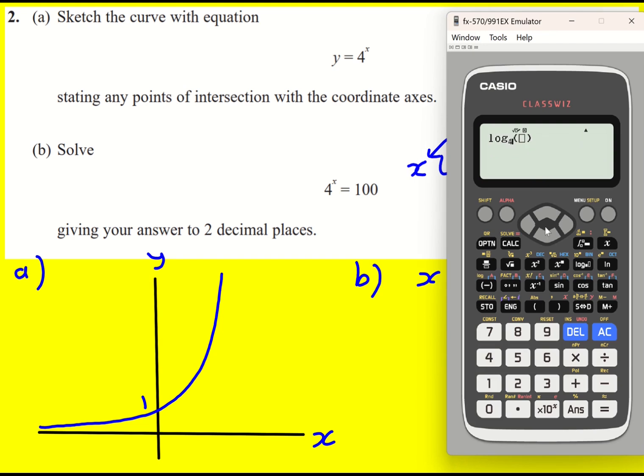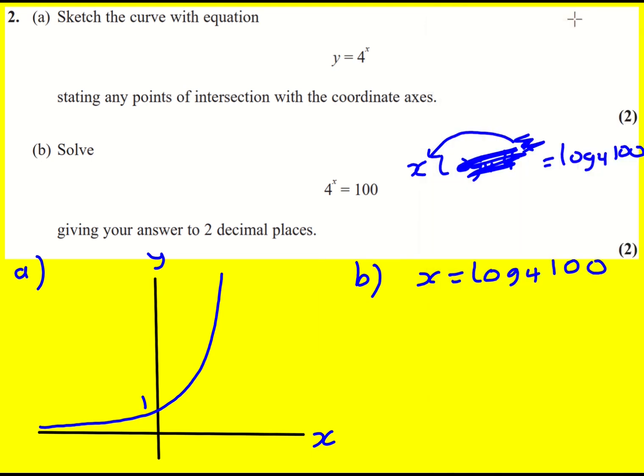You can take log to other bases but this is going to be the quickest route. So log to base 4 of 100 which gives us 3.3219. So to two decimal places, 3.32.